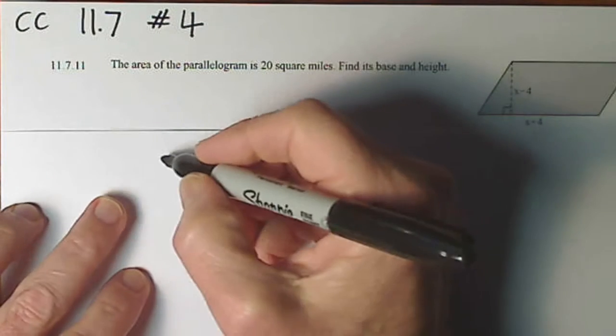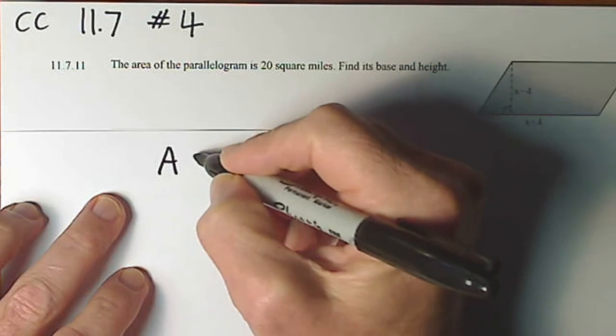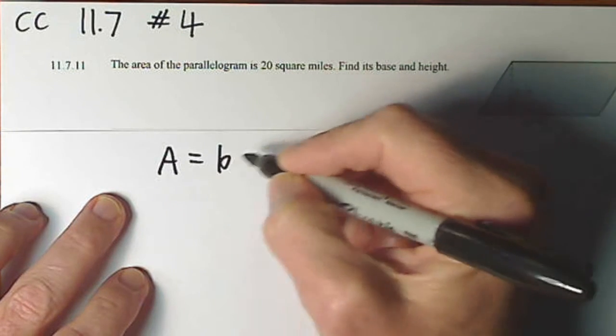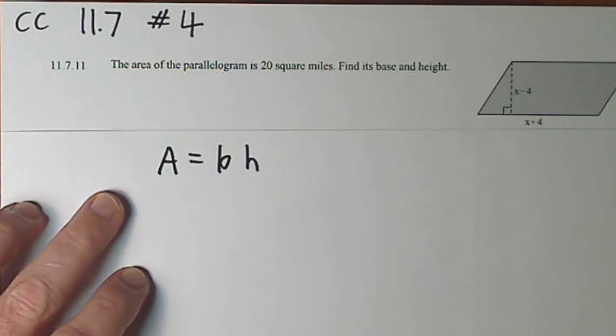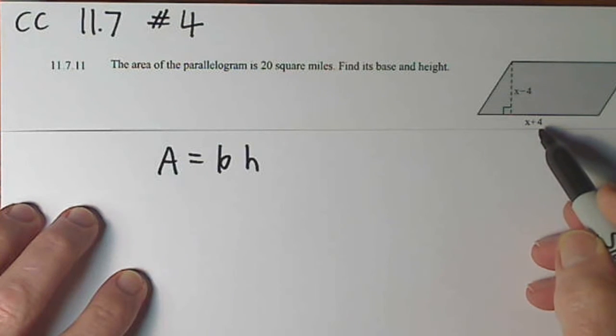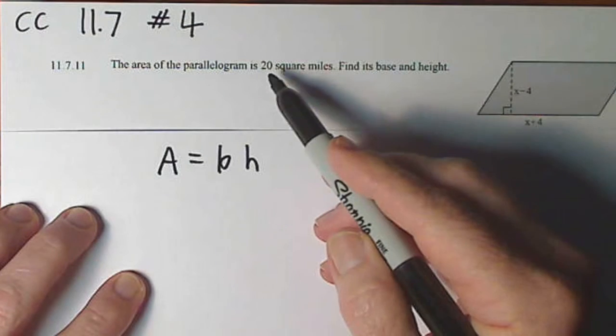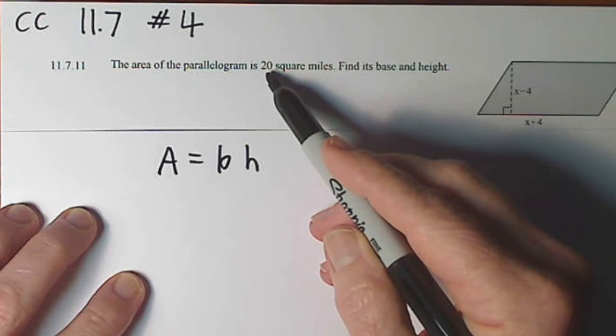So the formula for the area of a parallelogram is area equals base times height. For base, we have x plus 4. For height, we have x minus 4. And the area is given to be 20.